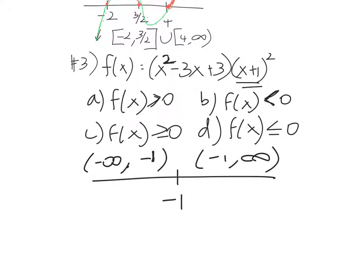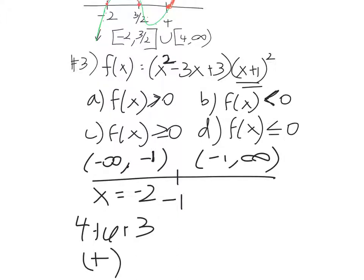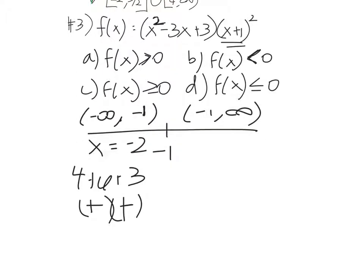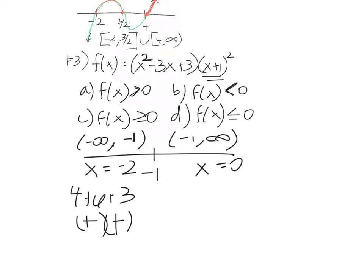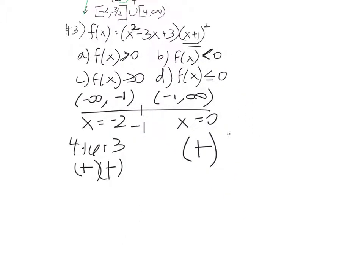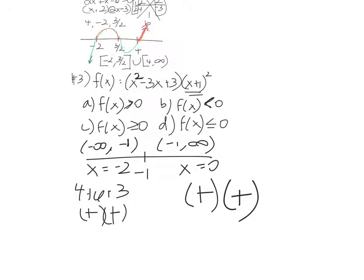Negative 1 is our only zero, so this breaks up into only two intervals to test. Let's pick x equals negative 2 for the left interval. Plug it into x squared minus 3x plus 3: negative 2 squared is 4, minus negative 3 times negative 2 which is 6, plus 3 — I don't even care what that equals, I know that's a positive. And x plus 1 squared is always going to be positive because it's squared. So in the interval from negative infinity to negative 1, we're always positive. Now let's pick x equals 0 for the right interval: 0 minus 0 plus 3 is a positive, and 0 plus 1 squared is also positive.